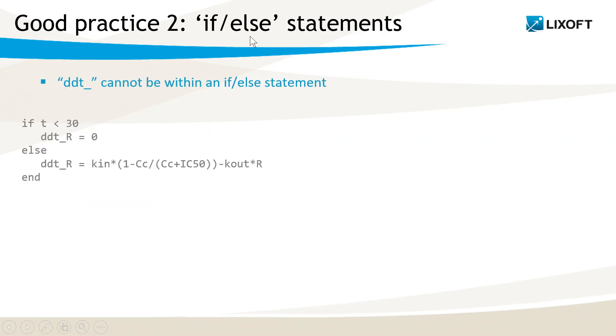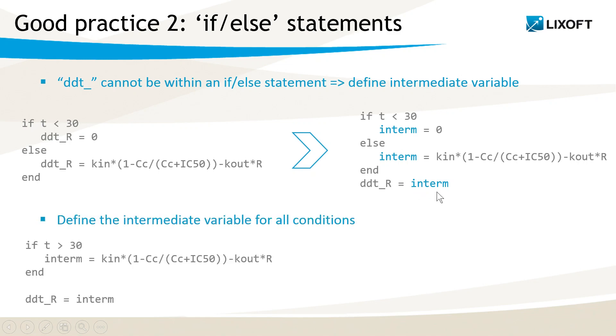The second good practice is about if-else statements. It is not allowed to write the ddt underscore within an if-statement, as I have done here. So the solution is to define an intermediate variable defined for each if-case, and then a unique ddt underscore that uses the intermediate variable. Be also careful to define the intermediate variable for all conditions, so I may be tempted to write this, for instance, defining the intermediate variable only for times bigger than 30. If you do that, you may have no error but a really unexpected behavior. So the good practice is to really define the variables for all possible conditions.